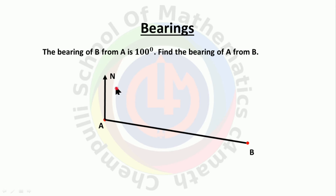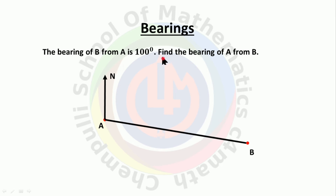Next problem: the bearing of B from A is 100 degrees. Find the bearing of A from B. 'B from A' means the angle is at A and equals 100 degrees. 'A from B' means we need to find the clockwise angle at B. Since the question says 'find' (not 'measure'), we use properties rather than a protractor.